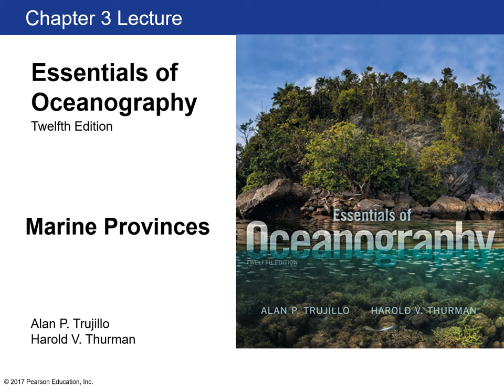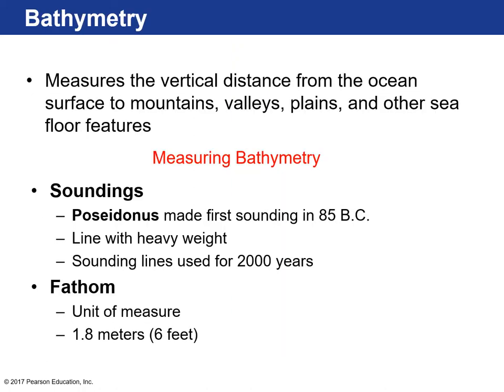Oceanography class — let's go over Chapter 3: Marine Provinces. Bathymetry is an understanding of the topology of the ocean floor — the vertical distance from the ocean surface to the many different features on the landscape of our ocean basins, which includes mountains, valleys, plains, and other seafloor features like volcanic features.